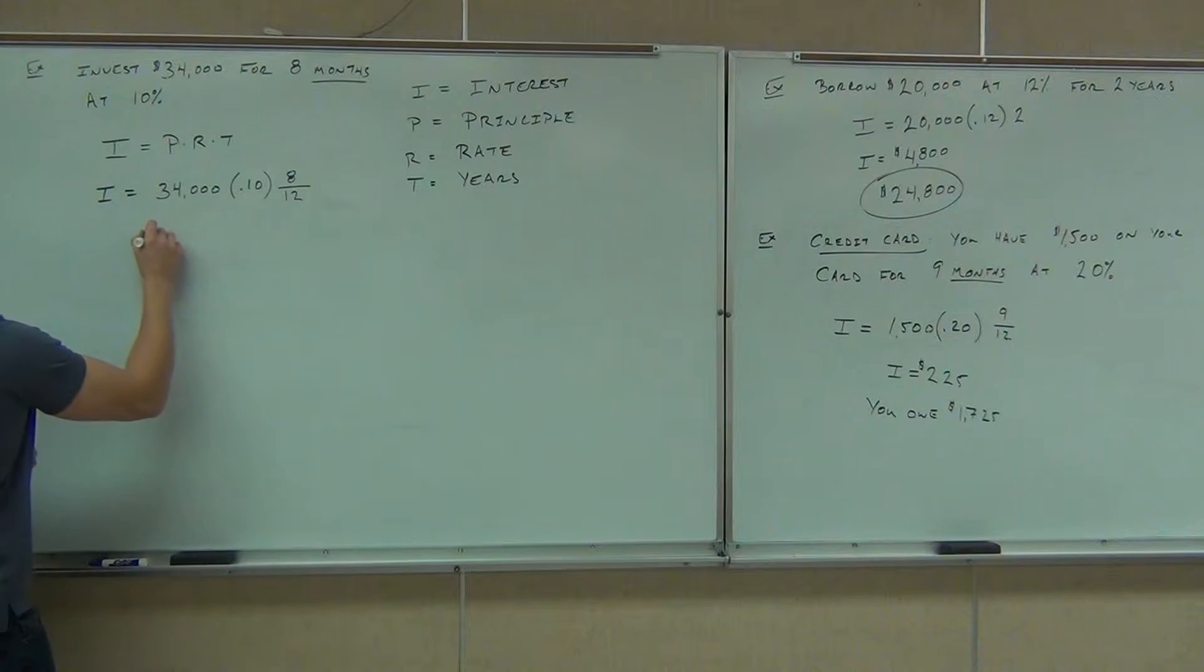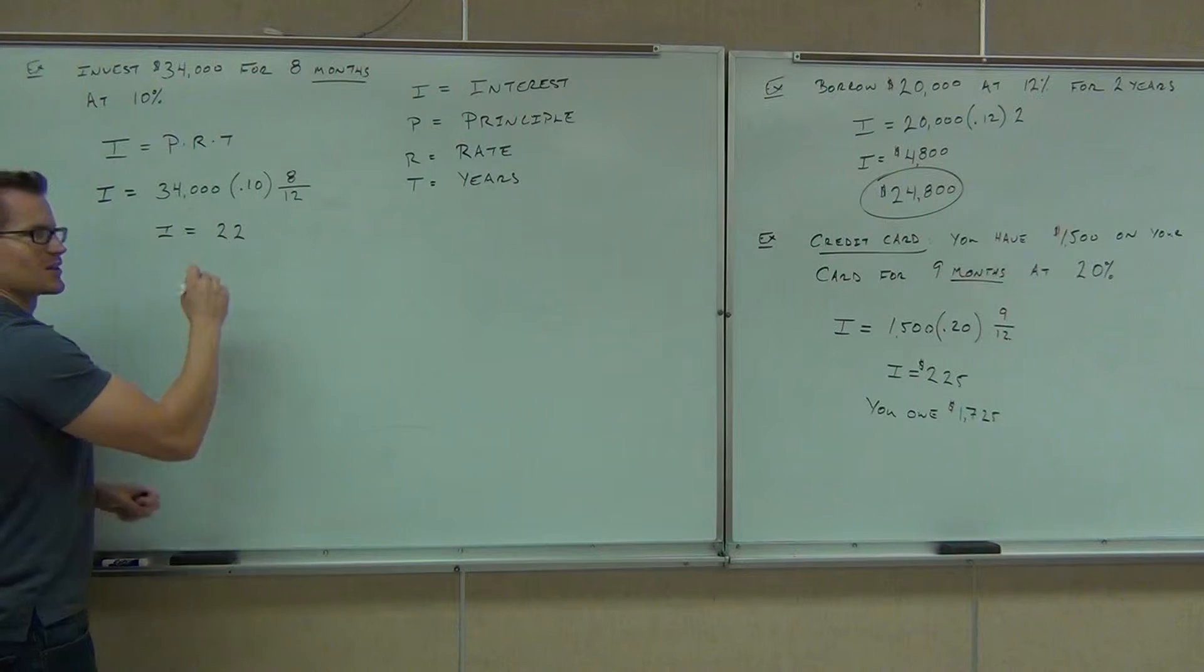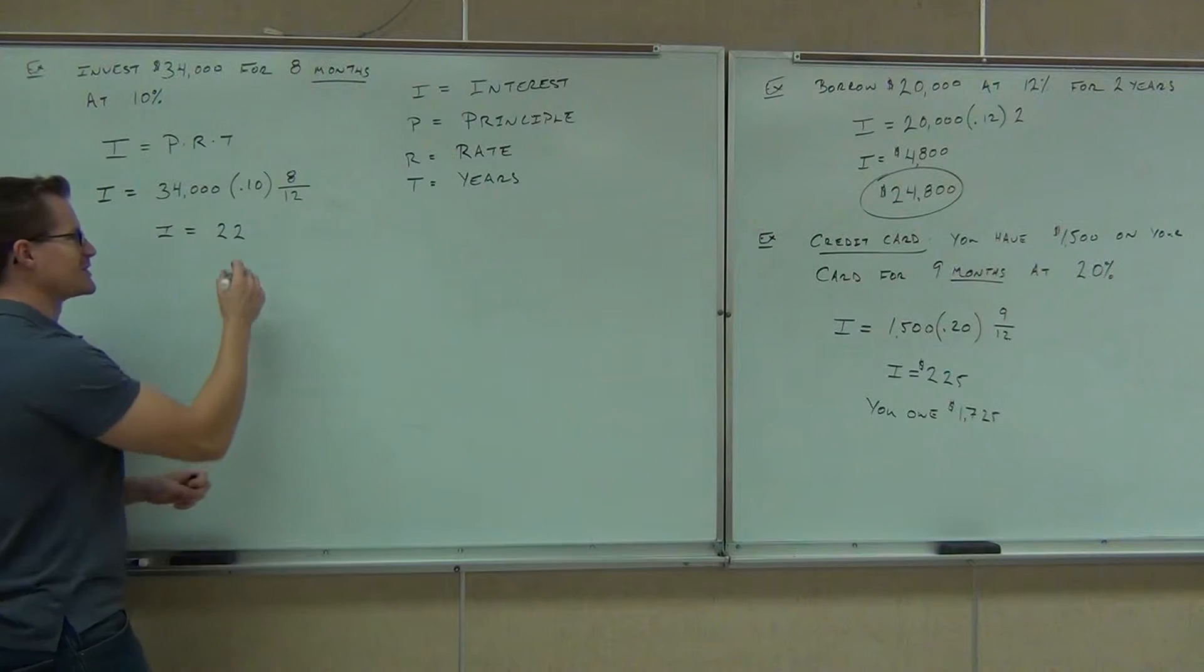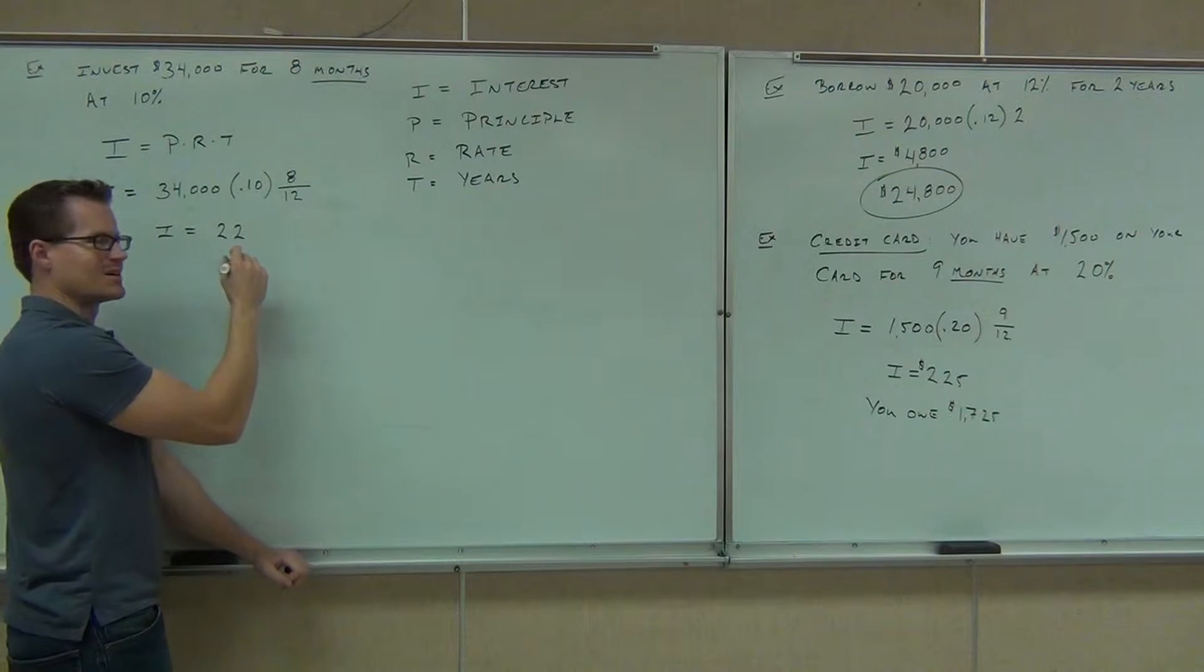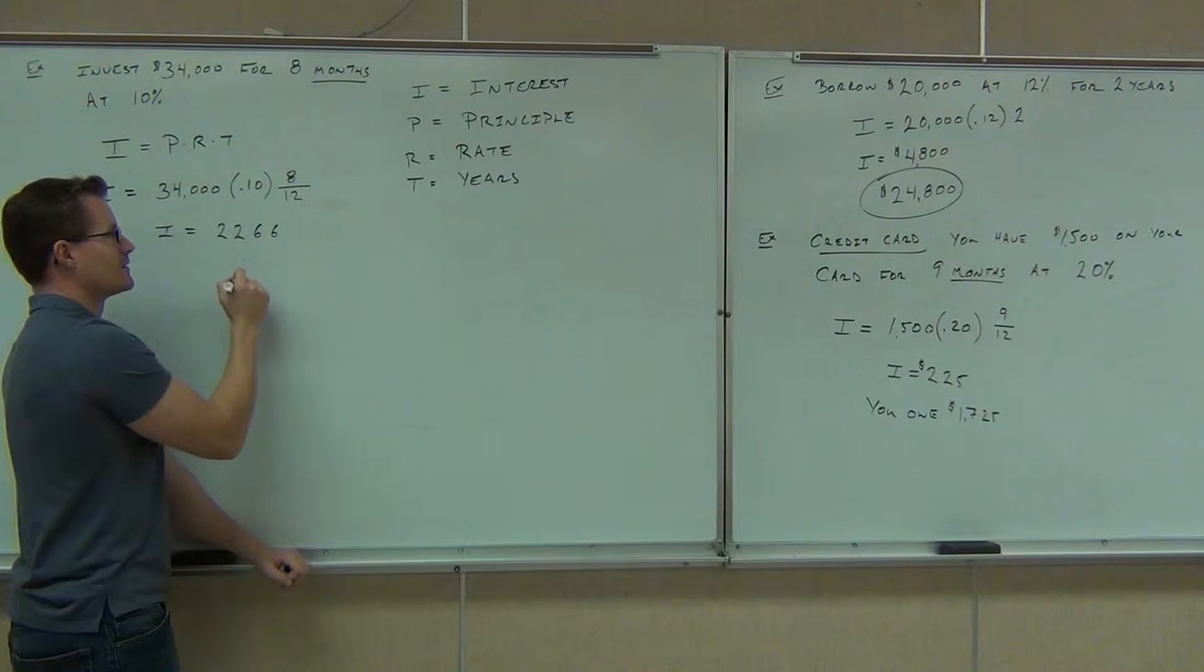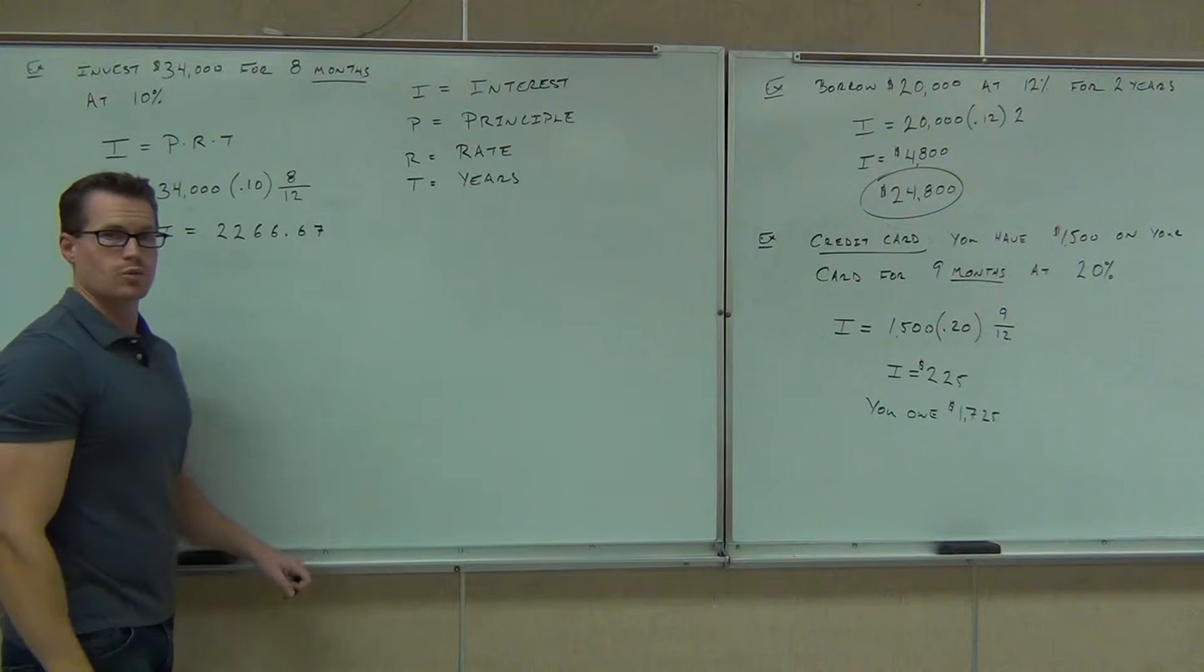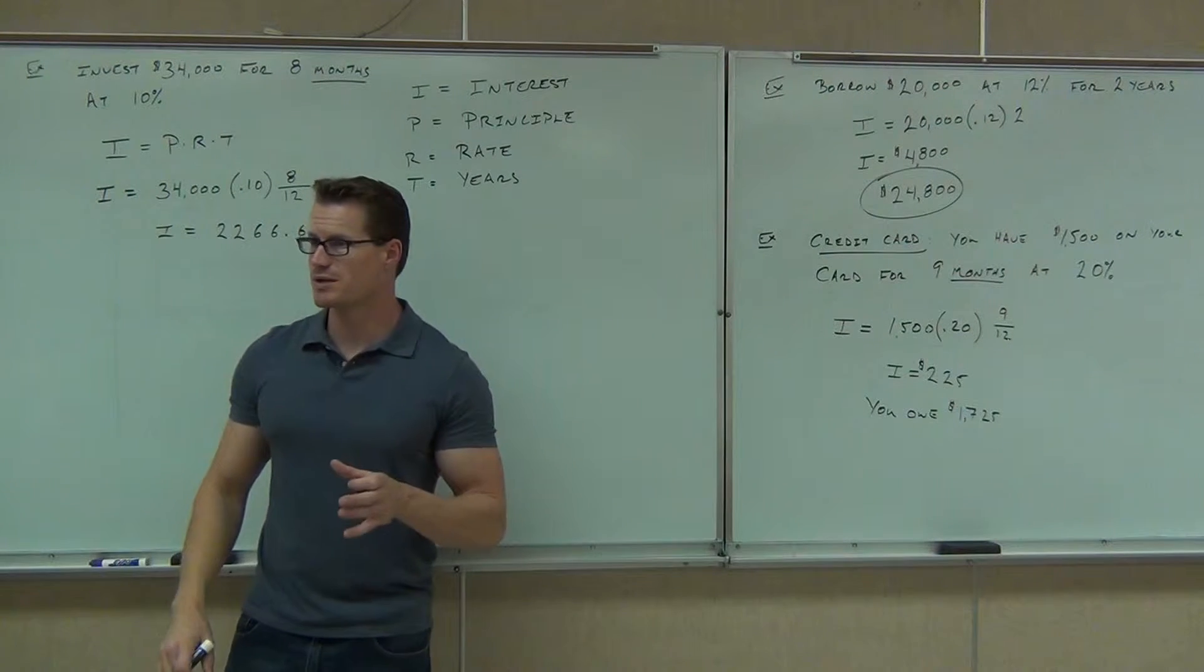What did you get? Two, two, six, six, point six, six, six, seven. You guys sound like robots. That was funny. So we're rounding to the pennies because we're talking about pennies here.